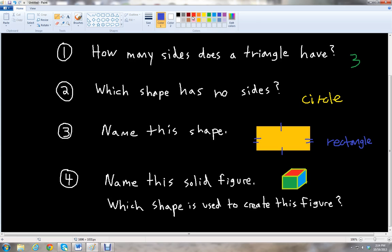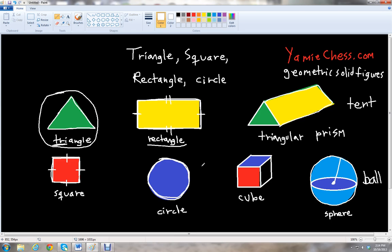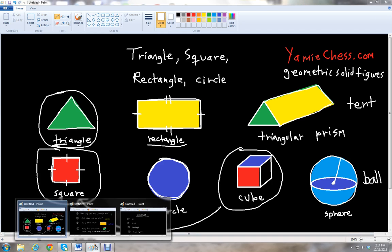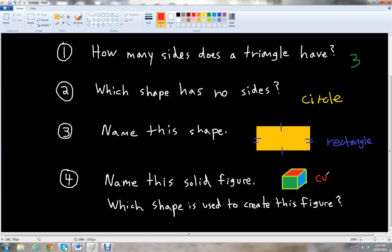And then in question four, it says to name this solid figure. And so which shape is used to create this figure? So the solid figure, it looks like would be the cube, right? And the shape that is used to create the cube would be the square. So we know this is a cube. And then we know the square is used to create this figure.